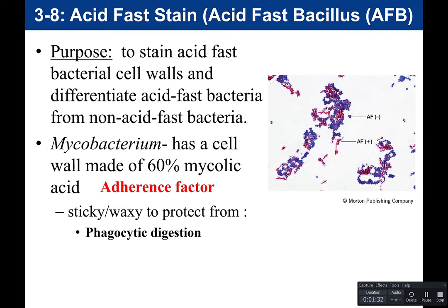Phagocytosis is a process that white blood cells use to engulf a foreign invader — they send out extensions, engulf bacteria, and destroy it. If bacteria are resistant to phagocytic digestion, it means either the bacteria resist phagocytosis itself because it sticks to a surface, making it difficult for the white blood cell to engulf, or the white blood cell can engulf the acid-fast positive bacteria but can't digest or break it down.